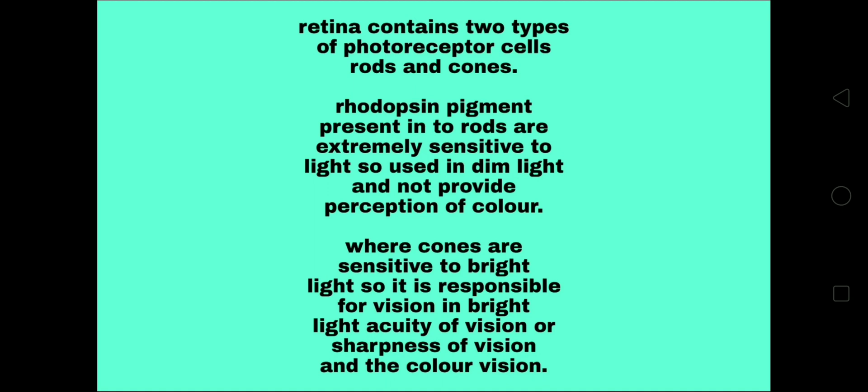Rhodopsin pigment is present in our rod cells, which are extremely sensitive to light, so they are used in dim light and do not provide perception of color.